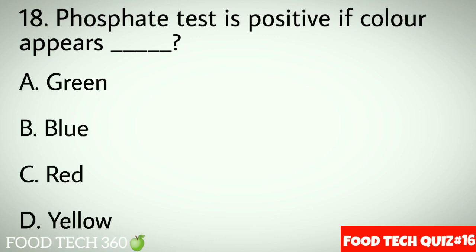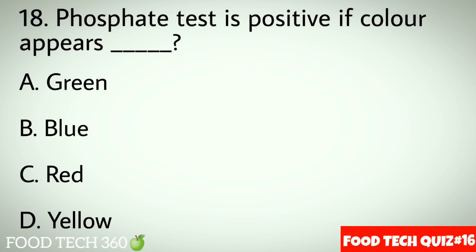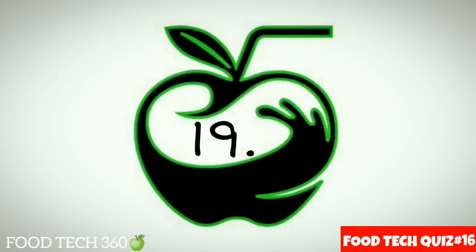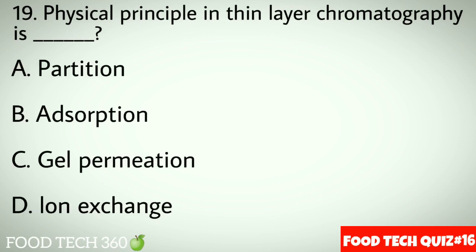Question No.18: Phosphatase test is positive if color appears dash. Options A: Green. B: Blue. C: Red. D: Yellow. Correct answer B: Blue.